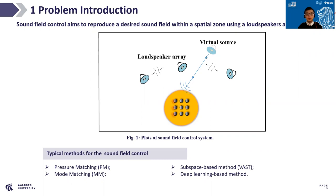First of all, I will introduce the background of Sound Field Control. Sound Field Control aims to reproduce a desired sound field within a spatial region using a loudspeaker array. For example, as you can see from Figure 1, we can set the desired sound field within a predefined sound zone using a point source from the position of the virtual source. The reproduced sound field generated by the loudspeaker array needs to approximate the desired sound field as much as possible, so the listener inside the zone can perceive the incident point source.